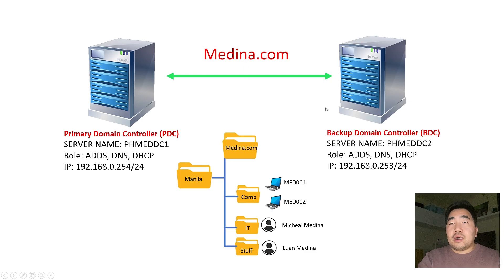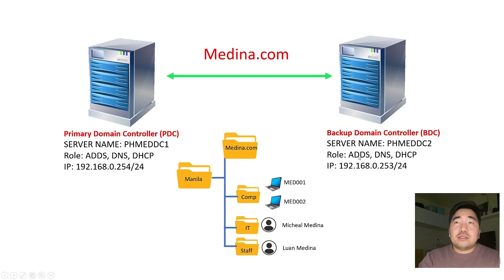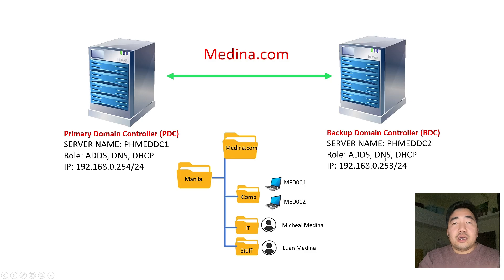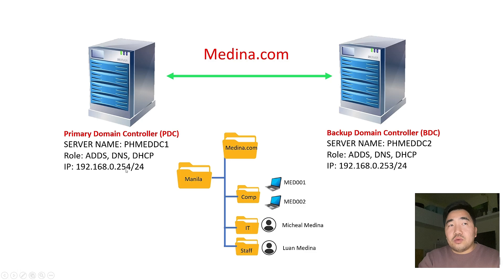Our goal in this video is to create a backup domain controller. I will name it PHMEDDC2, domain controller 2. The role will be AD DS and DNS. We will create another tutorial for the backup DHCP server. For today, I will create AD DS and DNS replication. The IP address will be 192.168.0.253/24. So the primary controller static IP is 254 and the backup controller is 253.